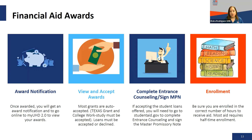Be sure that you are enrolled in the correct number of hours to receive your financial aid. Most financial aid requires at least half-time enrollment. For undergraduate students, that is at least six to eight hours; for graduate students, it is a minimum of four credit hours to be considered half-time. If you're unsure whether you'll be eligible based on your enrollment, feel free to contact our office and we can go over your awards package to see if there are hour requirements you need to meet.